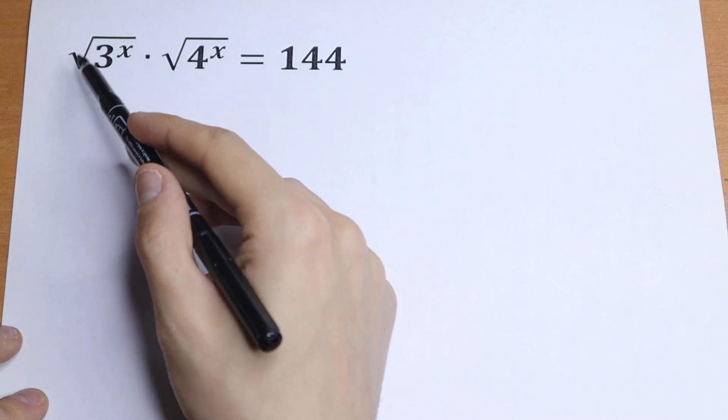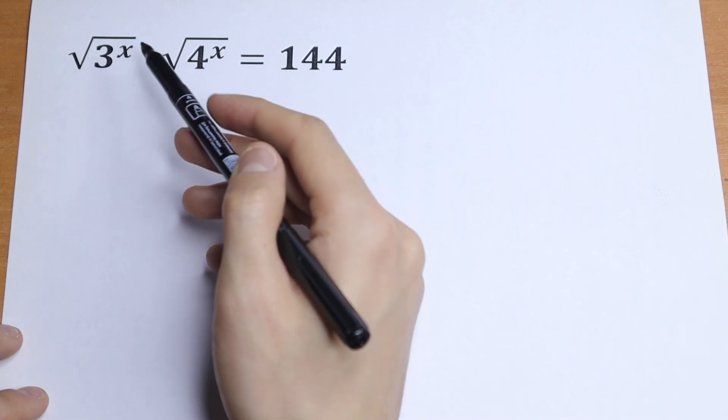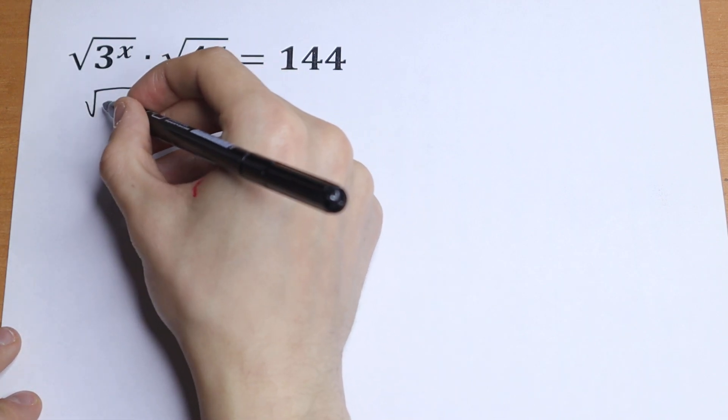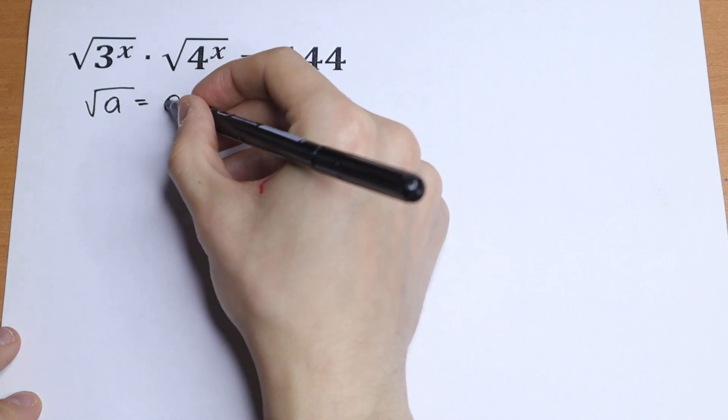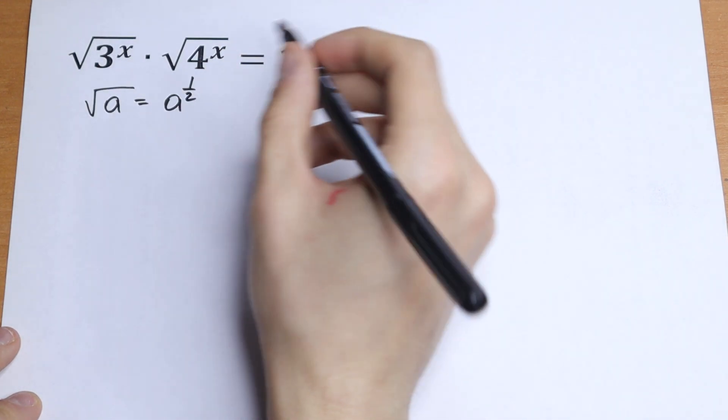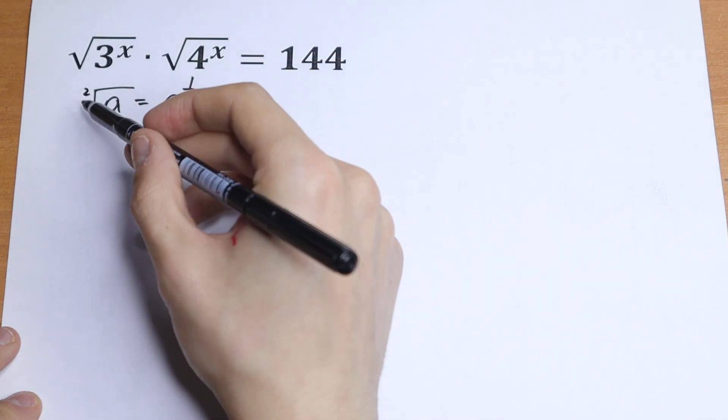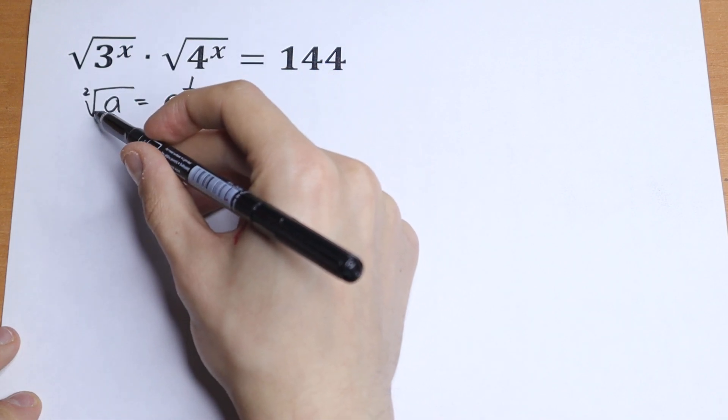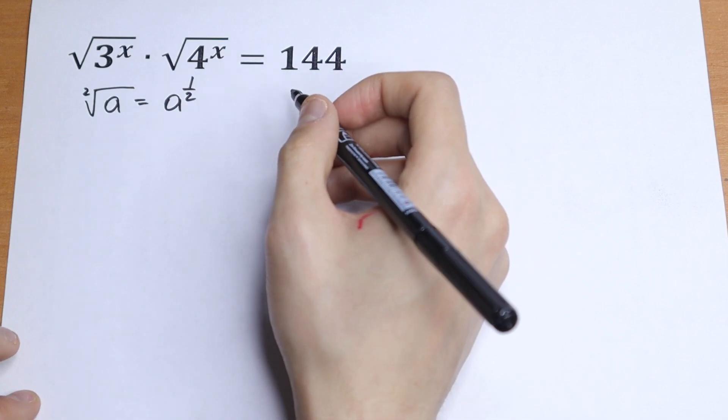First of all, we don't need this square root sign, so we can express it in a different way. If we have, for example, square root of a, we can write it as a to the power 1 half. So right here we have 2, but we don't write it as always. So we just can write this as a to the power 1 half.